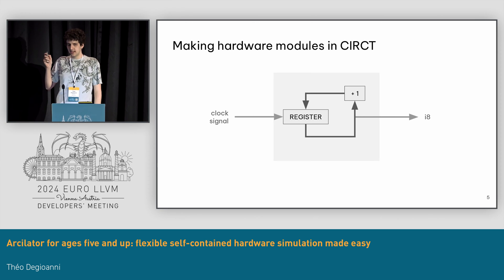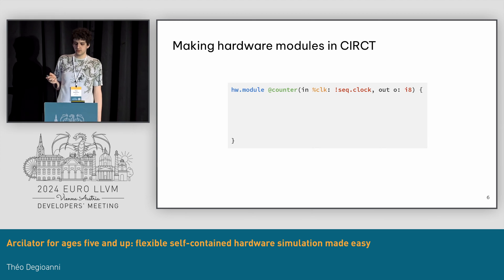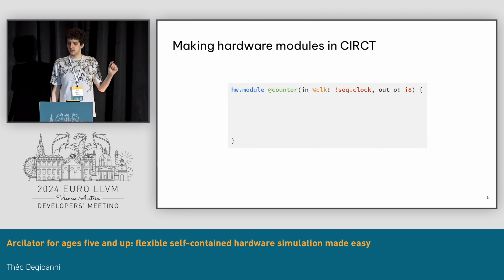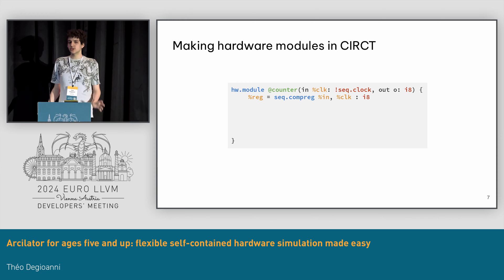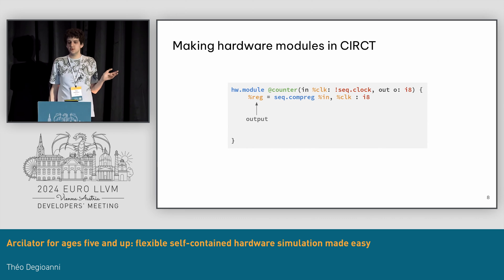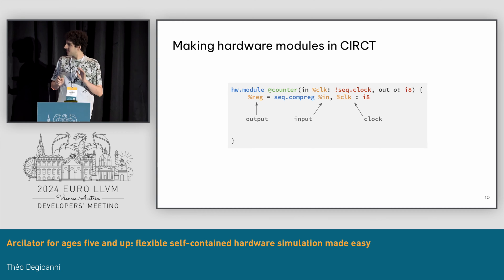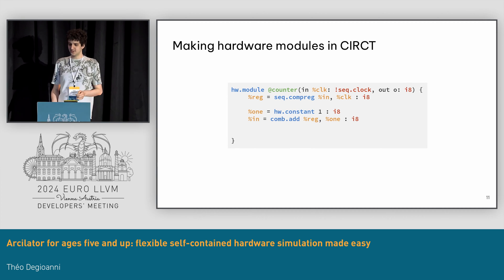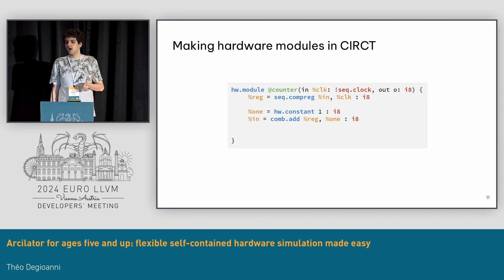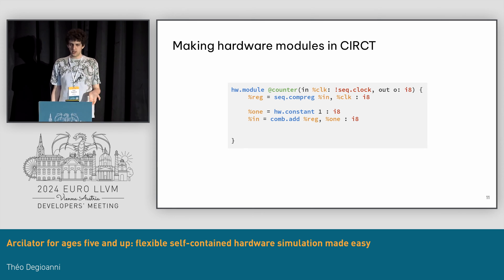So how do you do it in MLIR? First you define a hardware module, give it a name — counter here. It has an input, a clock, and then an output O, which is the output data. Then you have an operation that models the register itself. There are three values that are important: the reg output value, which is basically the data output of your register; the clock cycle; and then the input value. And if you pay attention, this value is not defined yet. But this is hardware — we don't care about dominance, we can just define it later. Now I'm defining it as just the value of the register plus one. And then finally, I output the value of the register.